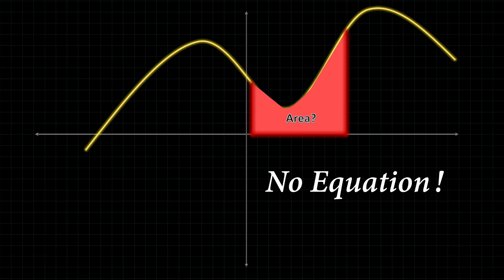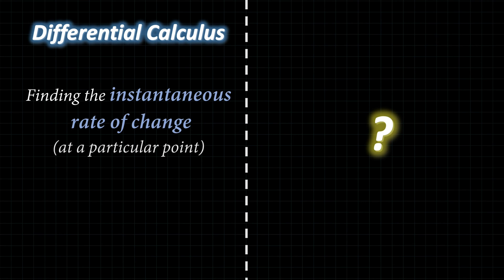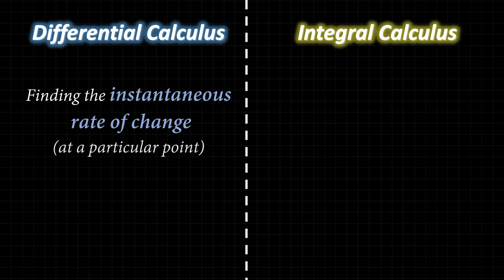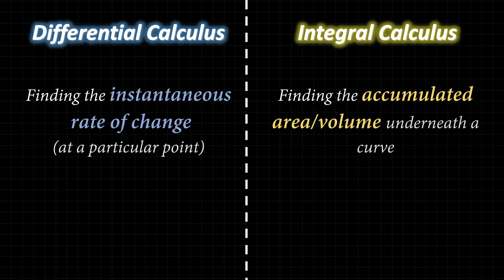No matter how many coordinates it gives us, we won't be able to accurately and reliably find the area — we would have to estimate to some degree. Well, the second branch of calculus, integral calculus — also known as Calculus 2 here in North America — tackles this exact problem. Integral calculus focuses on finding the accumulated area for two dimensions and volume for 3D underneath a curve.